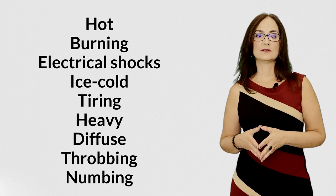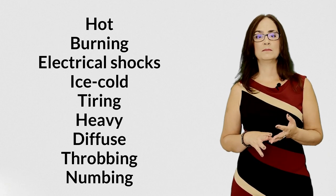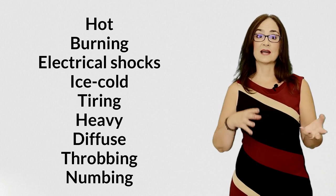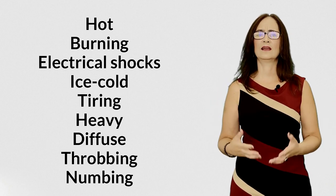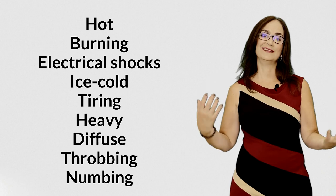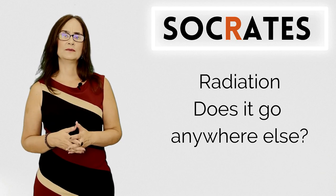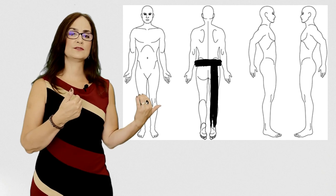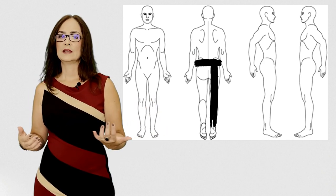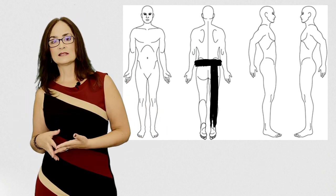Here are some examples of words you can use to describe your pain: hot, burning, electrical shocks, ice cold, tiring, heavy, diffuse, throbbing, numbing. Radiation: does the pain radiate somewhere? For example, neck pain that radiates to the arm, or buttock pain that radiates to the back of the thigh. Sometimes headaches are also caused by neck pain, and you may notice that the pain starts in the neck.